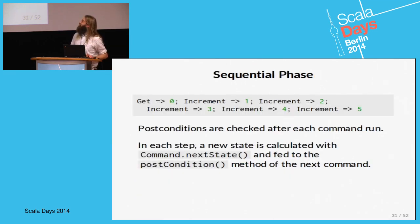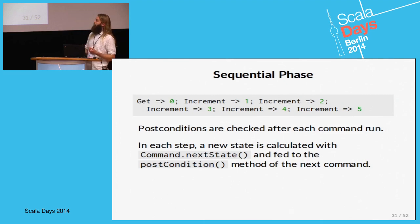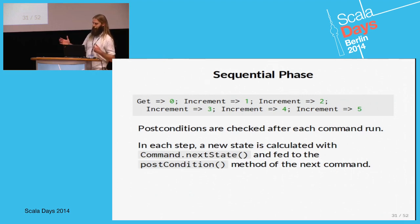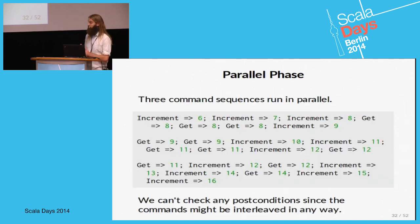When you increase the thread count in ScalaCheck, it divides the testing into two parts. It first runs an ordinary sequential phase where it runs a number of commands against the system and verifies post-conditions for each command. After that, it runs a parallel phase — in our case, running three command sequences in parallel.